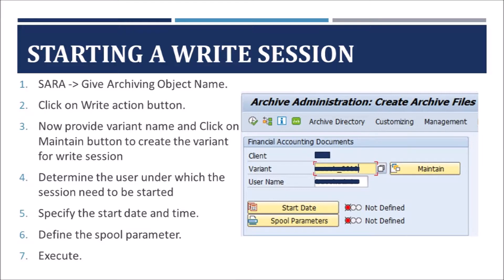To start a write session, go to SARA Transaction Code and provide the archiving object name. From the functions displayed, select the Write Action button. Then, maintain the variant for the write session by clicking the Maintaining button. After maintaining the variant, determine the user under which the session needs to be started, provide the username along with the start time and date. Finally, define the spool parameters and execute.